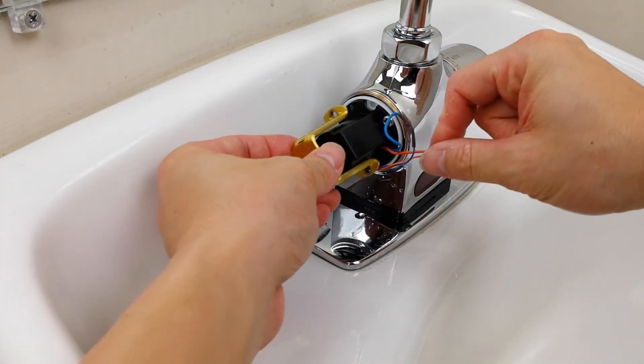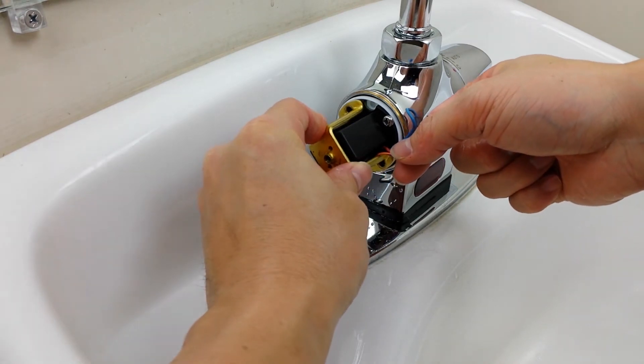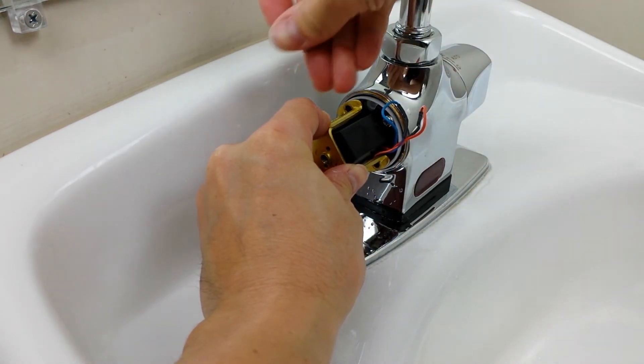Place the gold colored bracket onto the solenoid, making sure not to crimp the solenoid coil wire. Tighten all the screws hand tight. Do not over tighten.